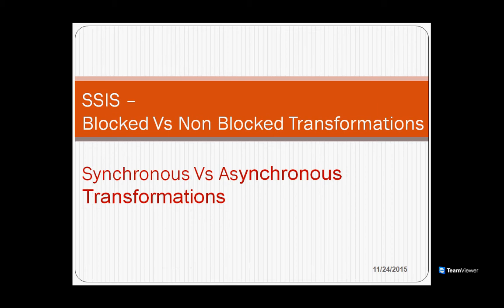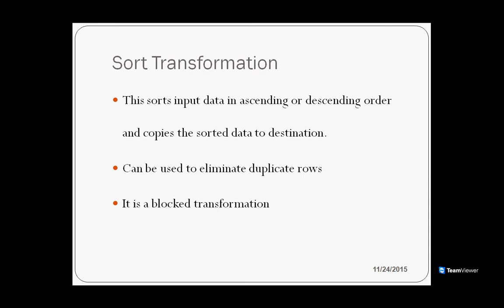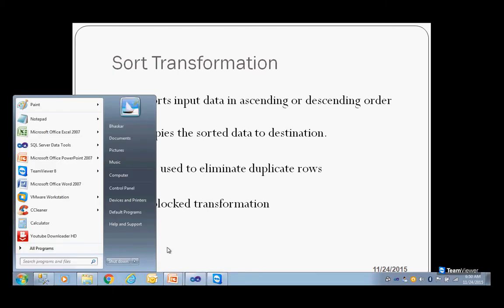Apart from those transformations, we have a transformation called Sorting. This sorts input data in ascending or descending order and copies the data to the destination. You can also have one more feature here — you can eliminate duplicate rows if you want to. It is clearly classified as a blocking transformation, so let us do a small demo on the blocking transformation.